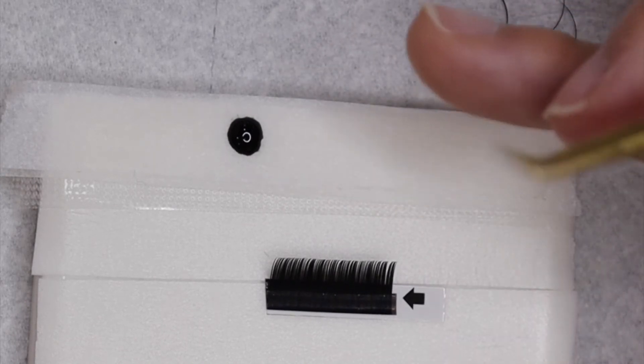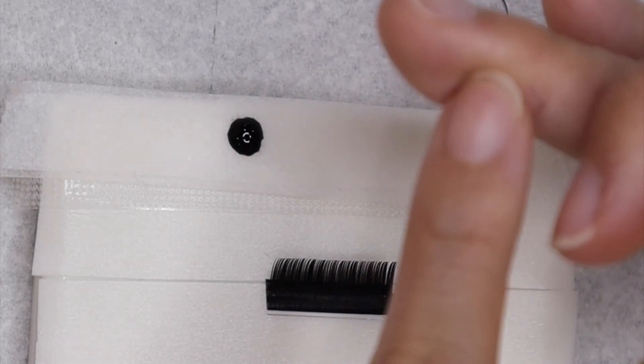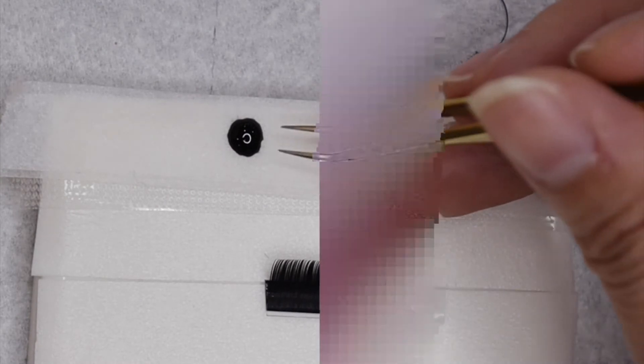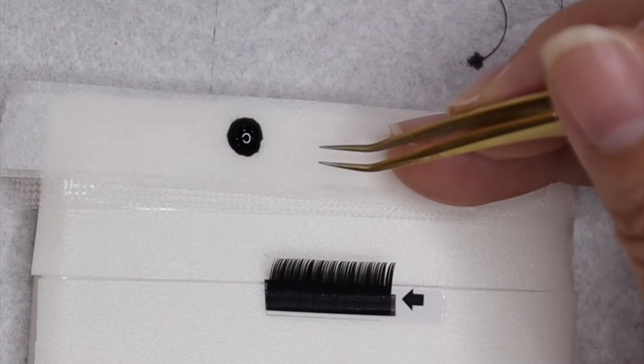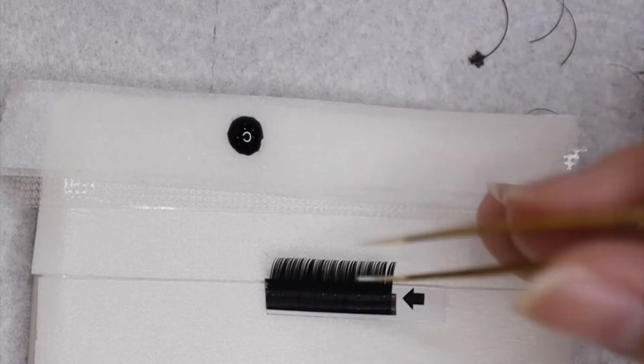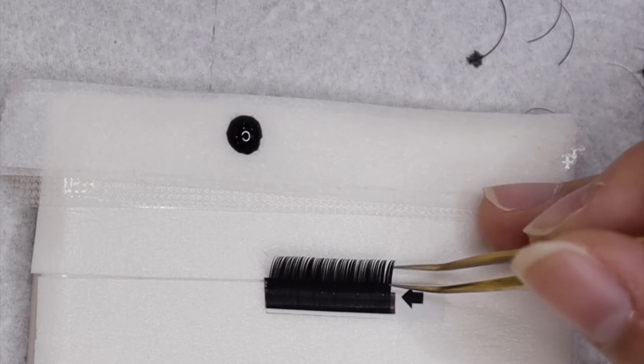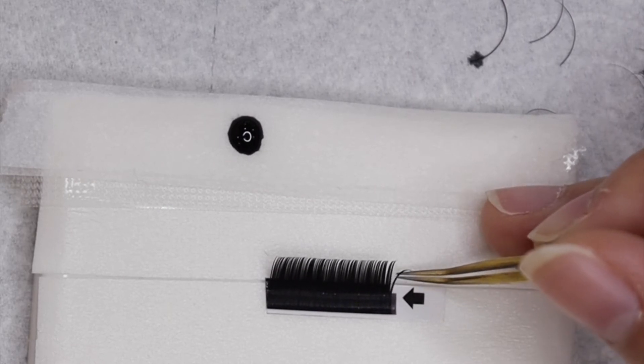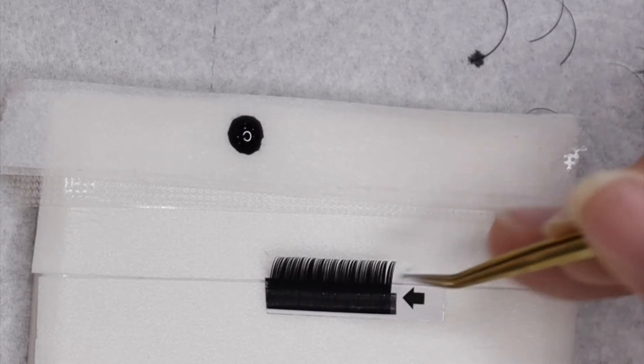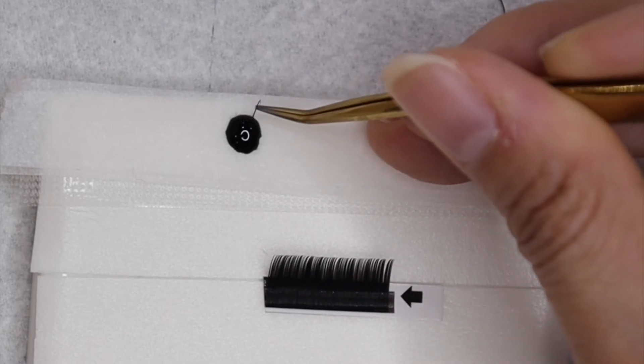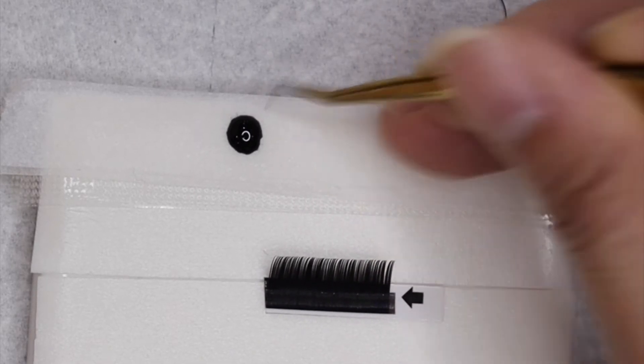You would need to use your pinky or your ring finger as a resting point to control glue dipping. Once again, you're going to grab one lash and dip two to three millimeters like so.